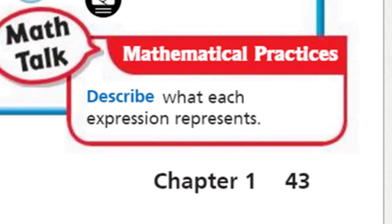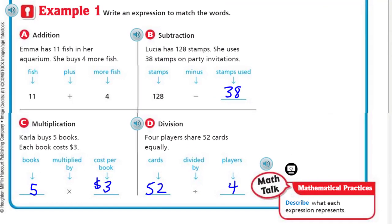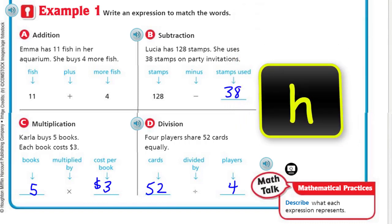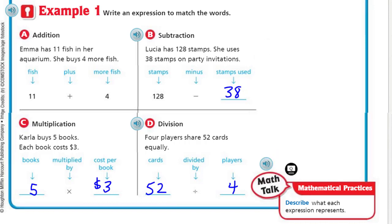Math Talk: describe what each expression represents. Each expression is going to mean different things. For A, the expression represents the number of fish she will have in her aquarium after buying 4 more. For B, it represents the number of stamps Lucia will have left. For C, it represents the total cost of the 5 books. And for D, it represents how many cards each player is going to get.